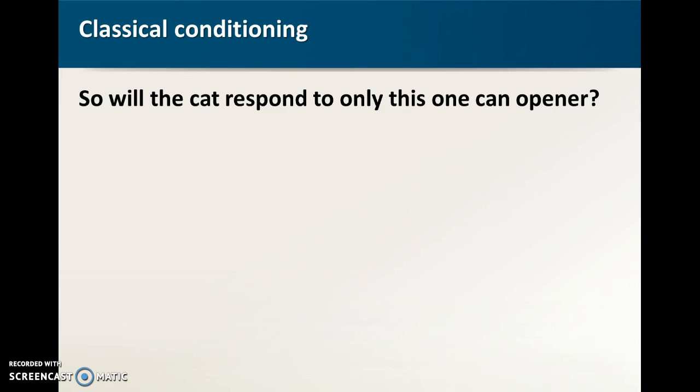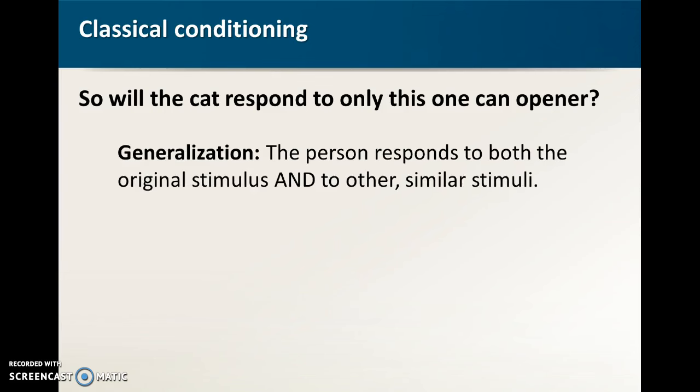So now we have to decide okay well will the cat respond only to this one can opener? Answer maybe maybe not. Sometimes we get what we call generalization. So the person or the animal responds to the original CS and to others that are similar. So you might have a kid that gets bit by a dog and now he develops a fear of all dogs. Or this cat might respond to all small electric household appliances maybe not just to can openers. Or maybe it will respond to other can openers that have a slightly different sound to them but are pretty similar. So sometimes we get generalization.